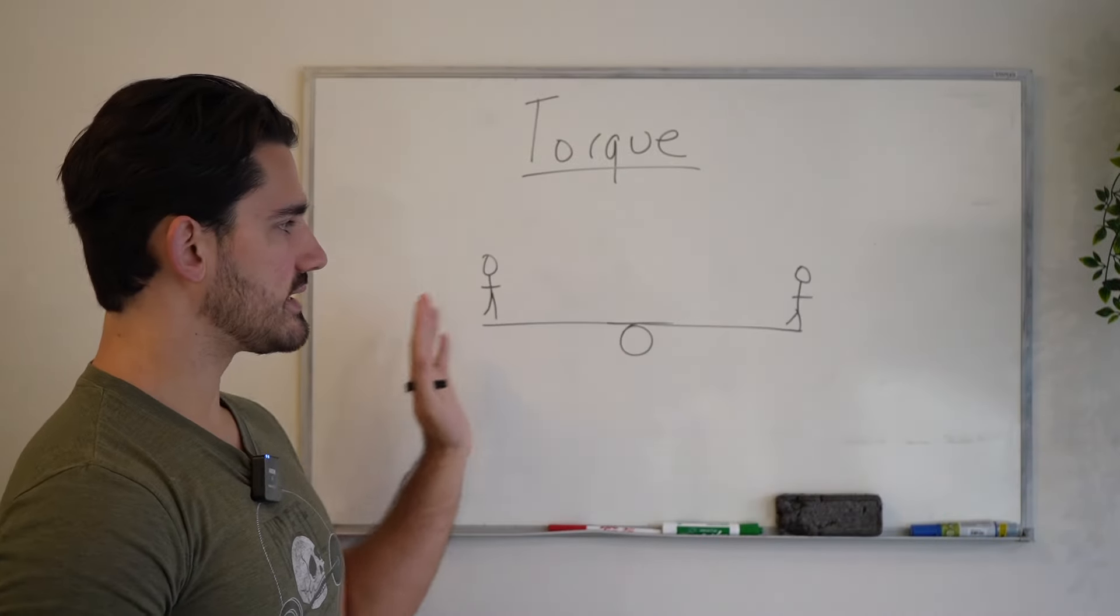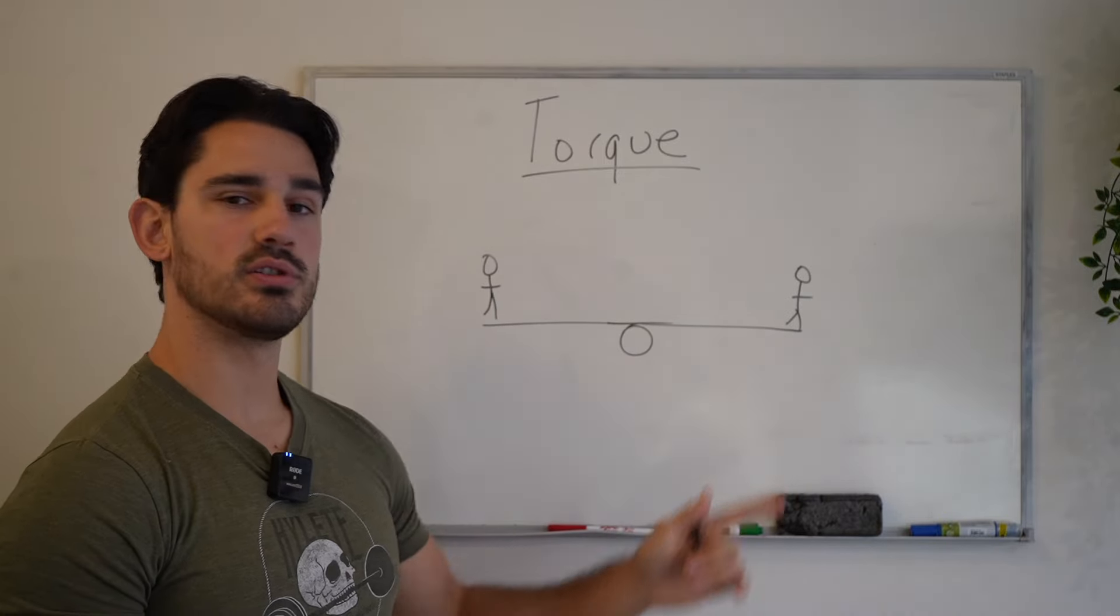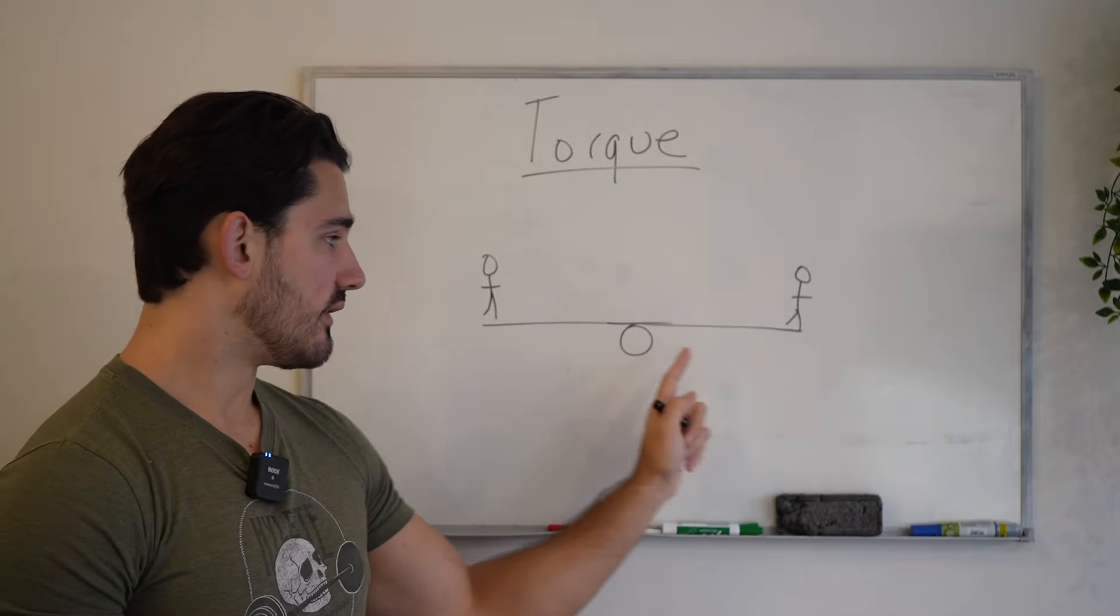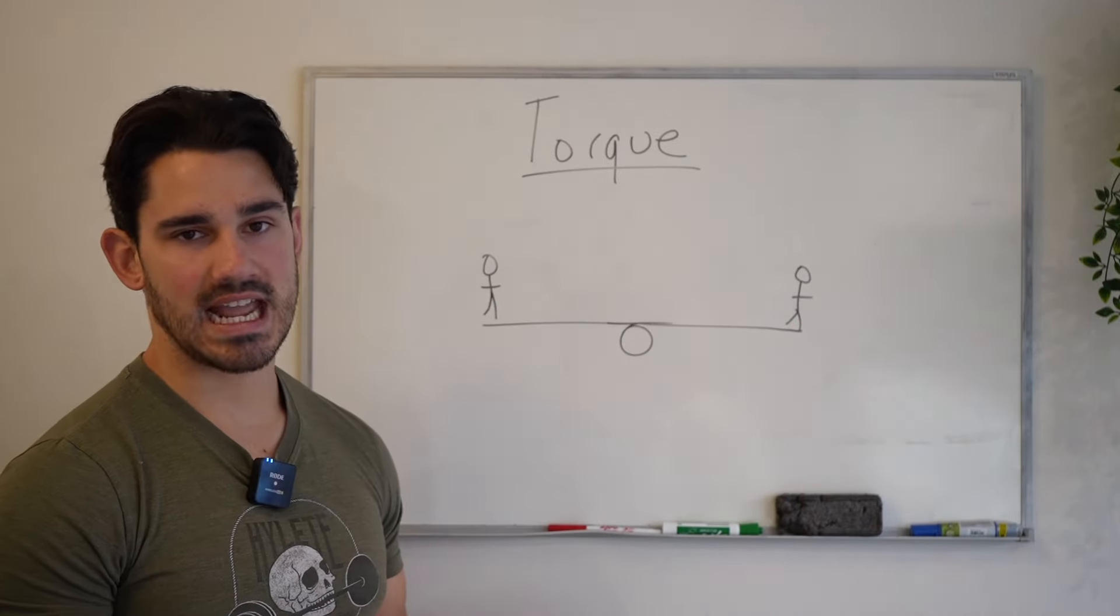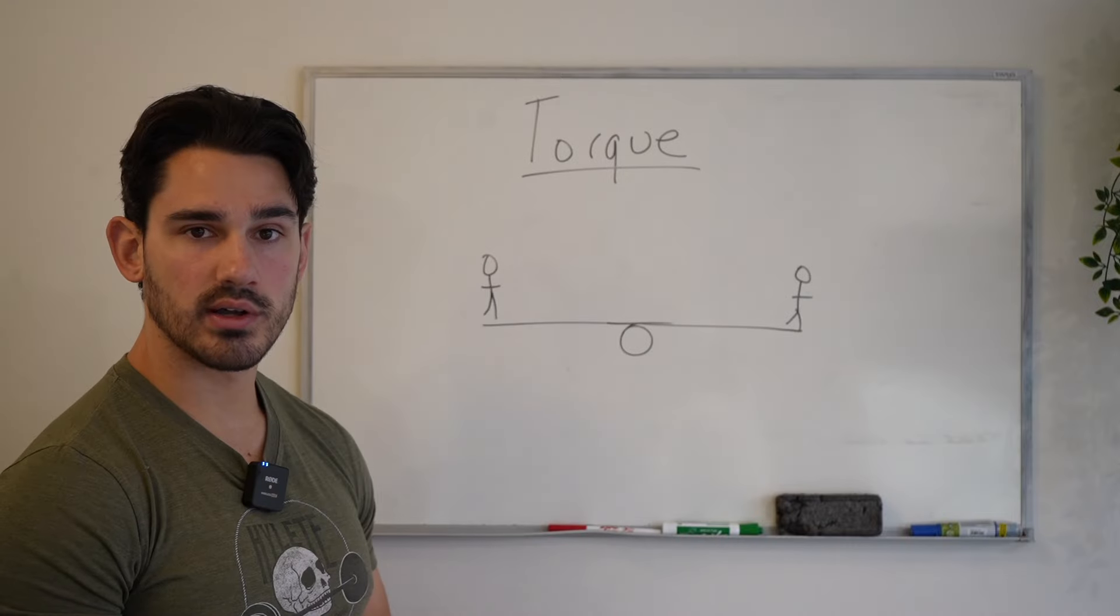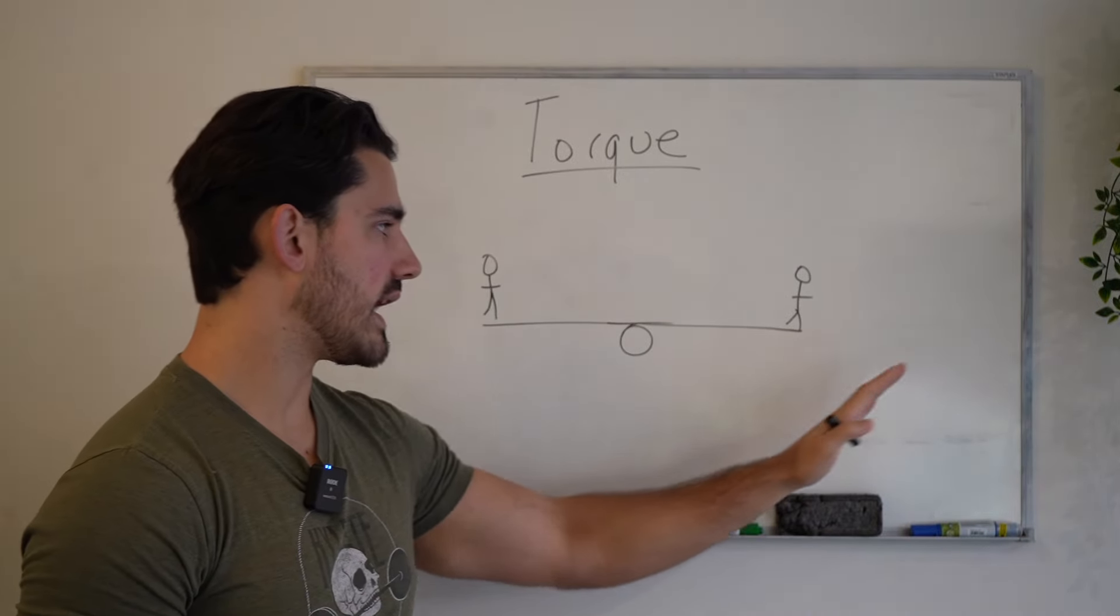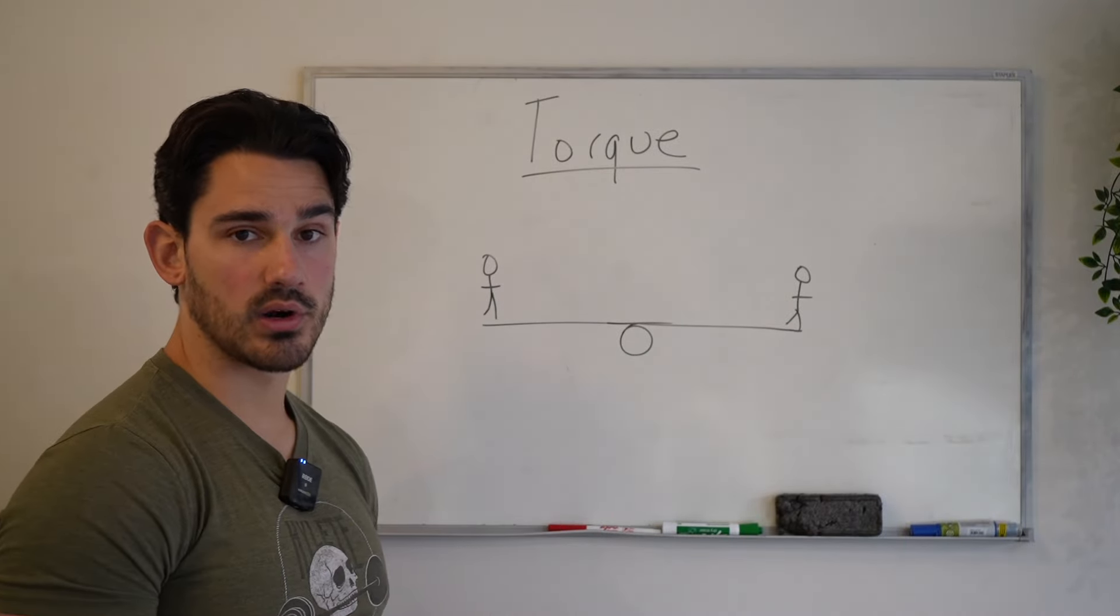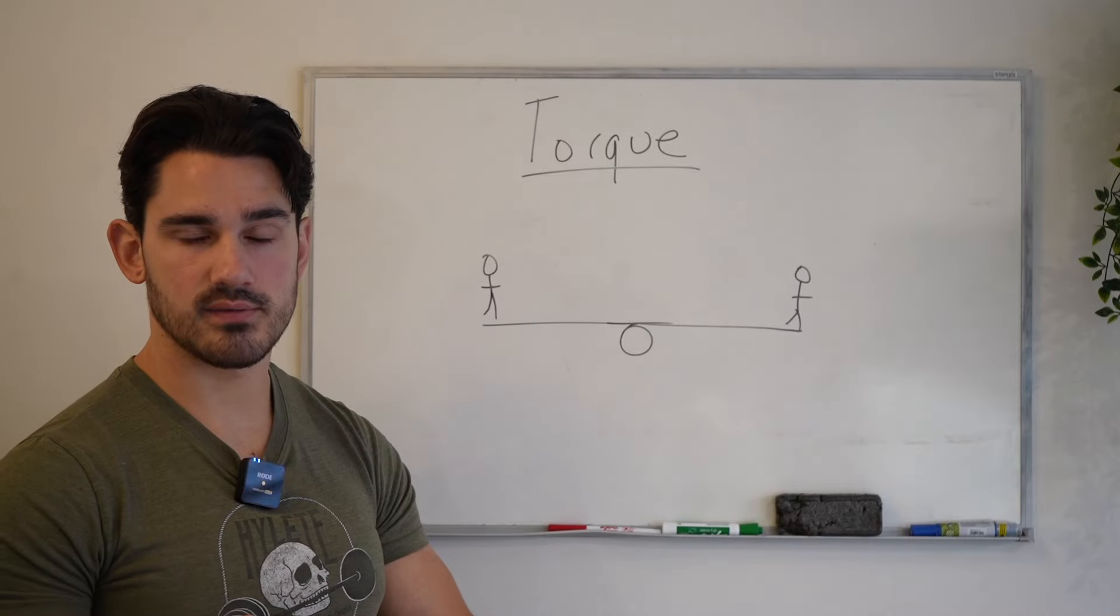Why did that happen? So when we looked at this original case, basically what we saw between the two dudes was because this dude was heavier, this dude stood no chance. But the second that this dude moved farther away from essentially where this thing was pivoting, we call this a pivot point, an axis of rotation, whatever you want to call it. Basically when this guy moved farther away, he became more effective at weighing the seesaw downward. And again, that's what torque is. Torque is a force's effectiveness.